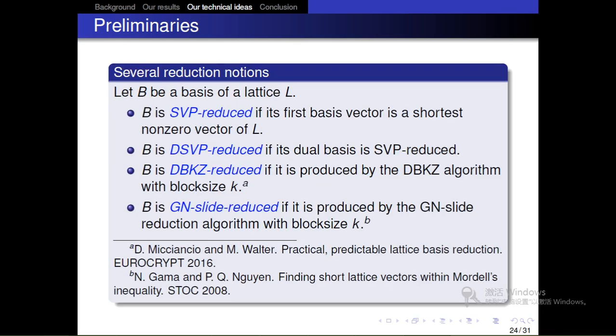Now I introduce several reduction notions we will use later. Let B be a basis of lattice L. B is SVP-reduced if its first basis vector is a shortest nonzero vector of L. B is HSVP-reduced if its dual basis is SVP-reduced. B is BKZ-reduced if it is produced by the Schnorr-Euchner BKZ algorithm with block size k. B is Gama-Nguyen reduced if it is produced by the Gama-Nguyen lattice reduction algorithm with block size k.